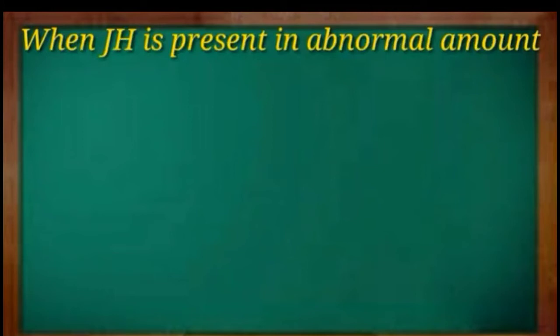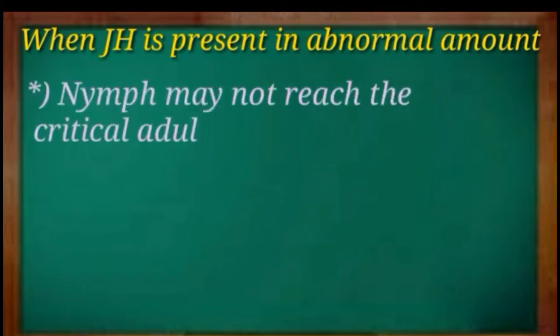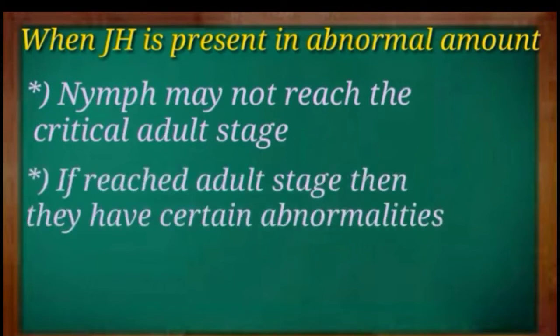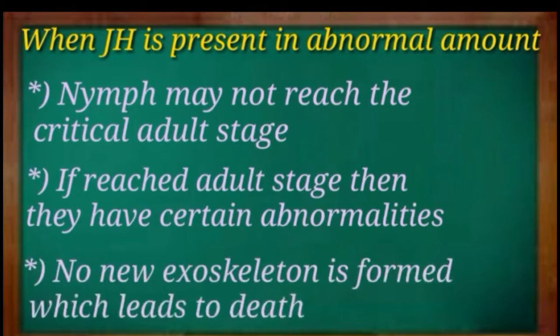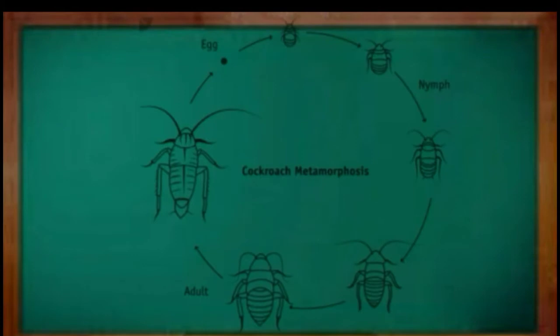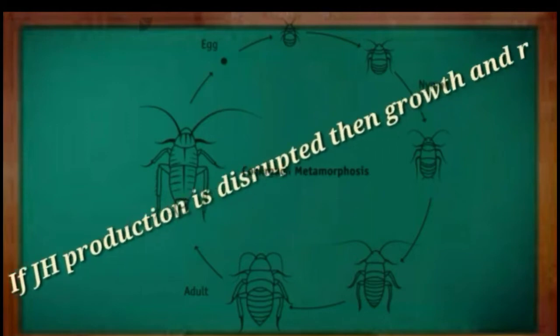The juvenile hormone controls many activities in their body — how many times a nymph or larva will molt, how long it takes to molt, and it also decides the time for the final molt to emerge into an adult reproductive stage. If juvenile hormone is present in an abnormal amount, the nymph may not reach the critical adult stage. If nymphs do develop into adult cockroaches, they are usually crippled or deformed. Nymphs are prevented from properly forming a new exoskeleton, which leads to dehydration and death. So if juvenile hormone is in an abnormal amount, their reproduction rate is reduced.